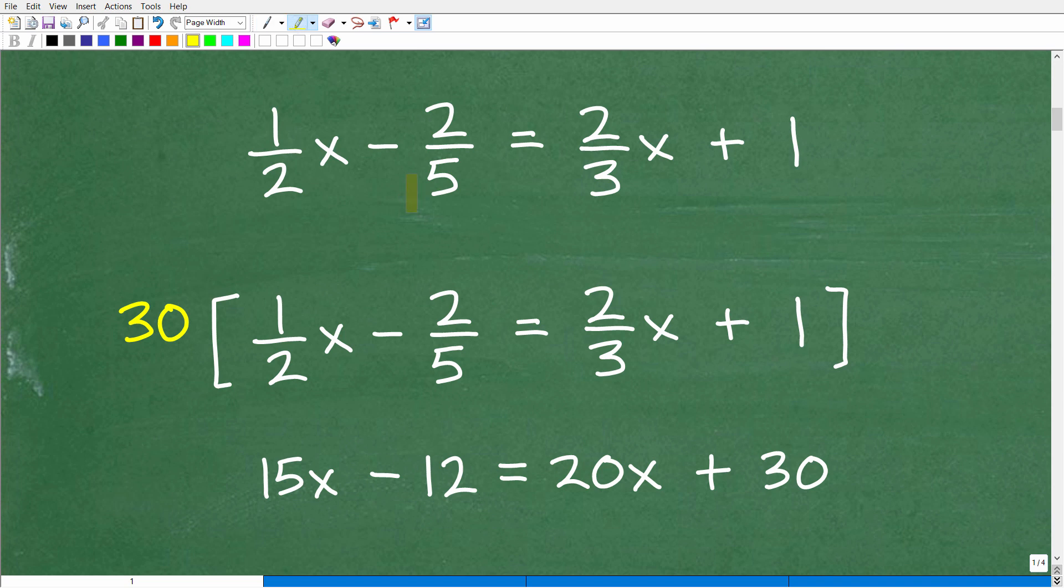So here is our equation. So 30 is the LCD right here. So we're going to take 30. Notice how you have this entire equation in brackets. That's what you want to do. And so you're going to use the distributive property.